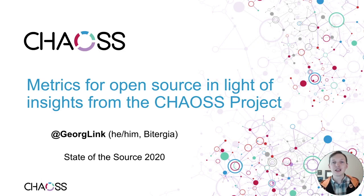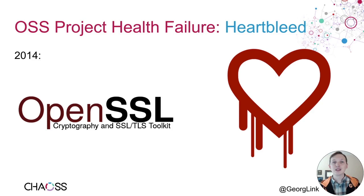To set the stage, let's travel back in time six years. Heartbleed was discovered and shook the world, shook open source specifically. What happened? Heartbleed is a vulnerability inside of OpenSSL — a library, an open source software library that was used by almost every server on the planet.